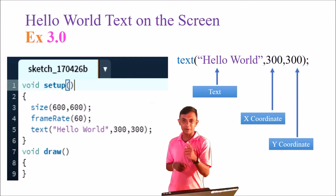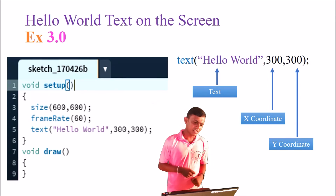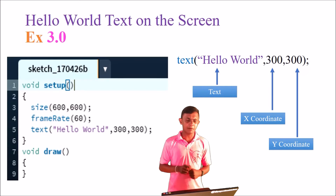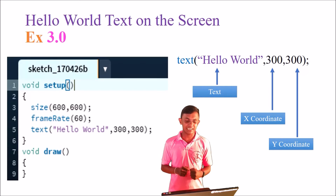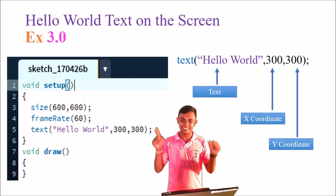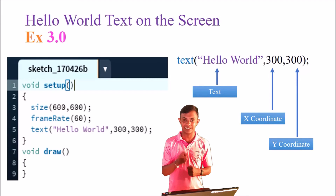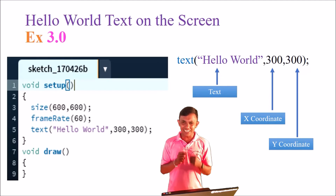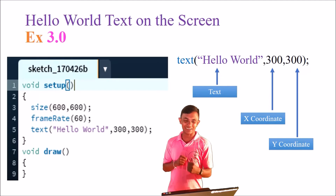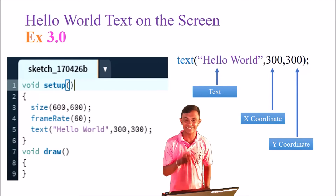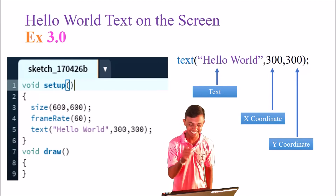Example 3.0. We can add the size — 600 by 600 in the sketch. We can set the frame rate. We can add the text function. We have roughly defined the size.